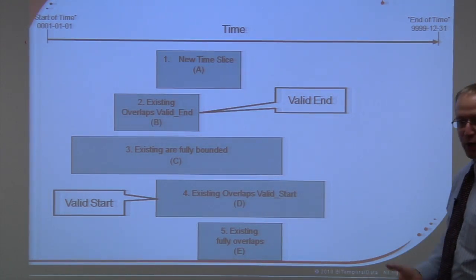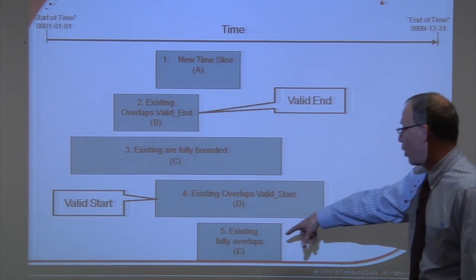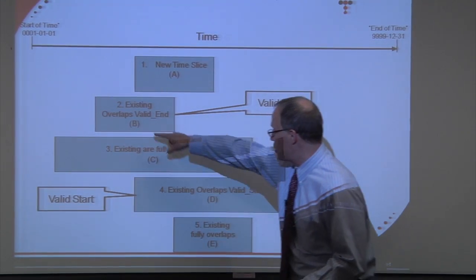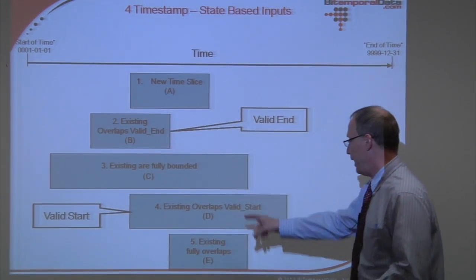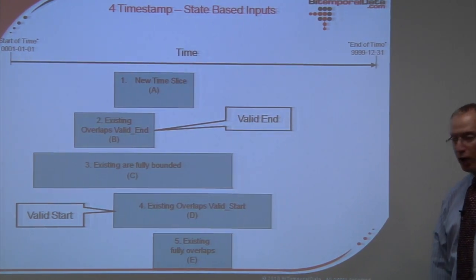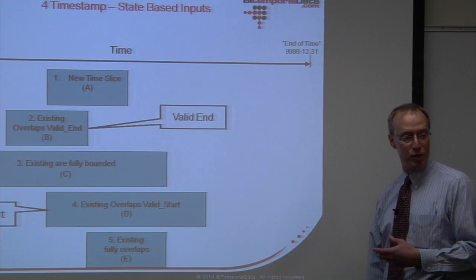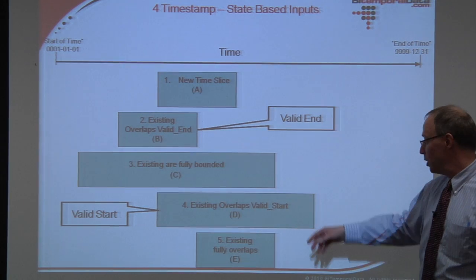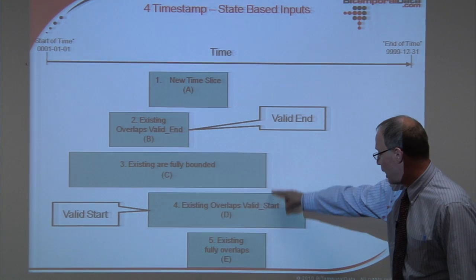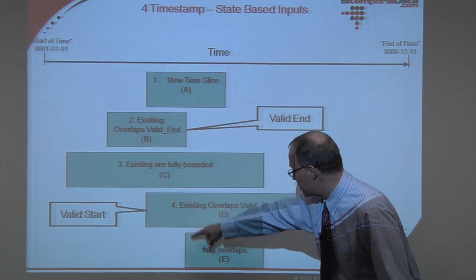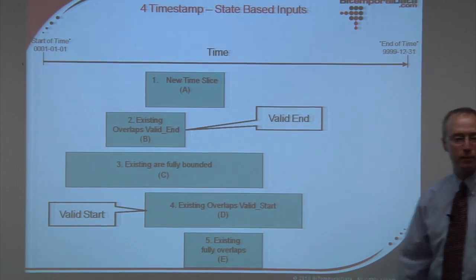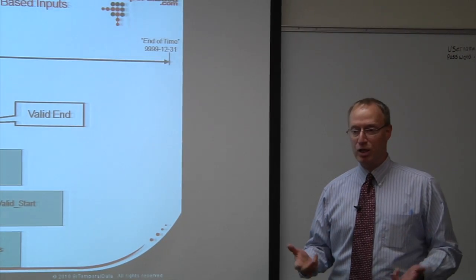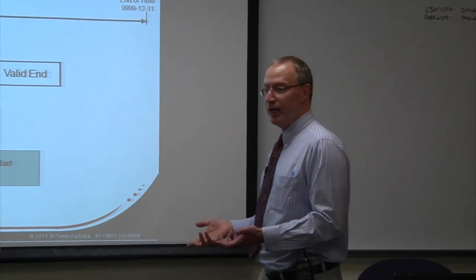The fourth scenario: you have an existing time slice that fully overlaps your new time slice. Logically delete it, then create three new time slices — one before, one for the new data, and one after. That's the algorithm in a nutshell for four-timestamp bi-temporal data maintenance, and what creates bi-temporal data that is easily queryable without the combinations of max and less-than.